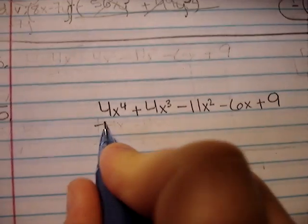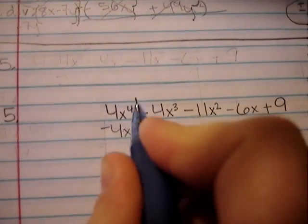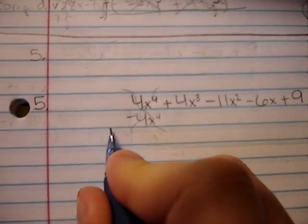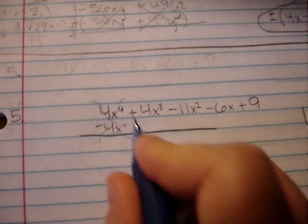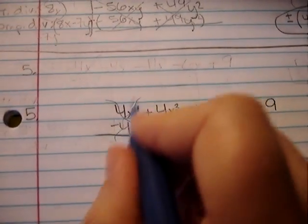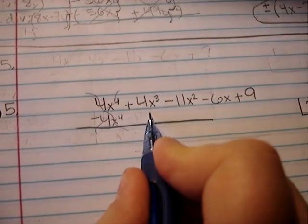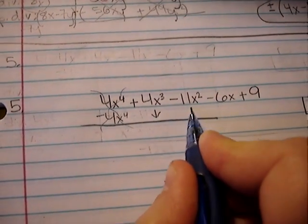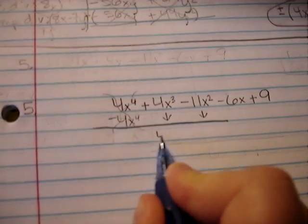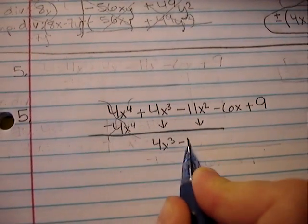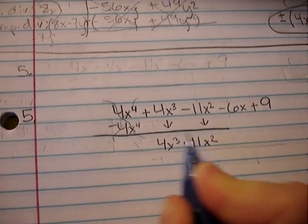And then we're going to subtract this just out of the problem. It's out of the picture. Let's bring down these two: 4x cubed minus 11x squared. So this is our remainder.